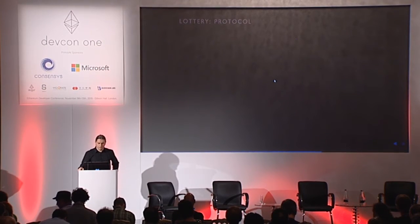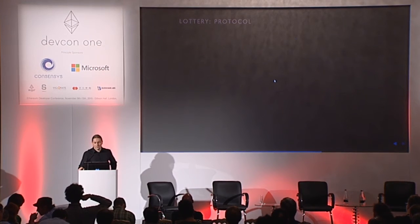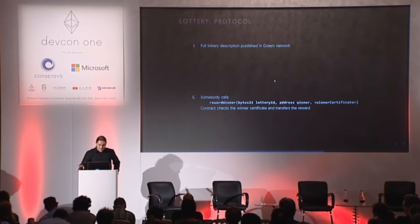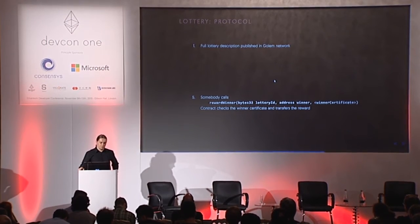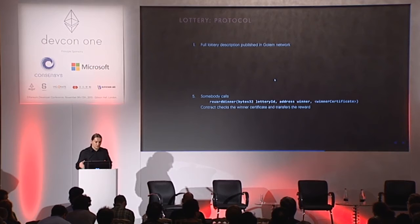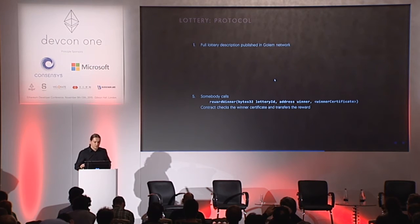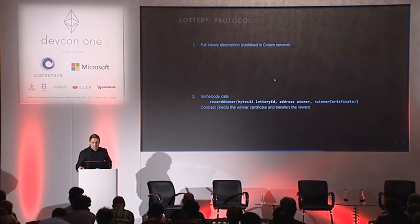In an ideal world, we would be able to draw a random number easily and in a fully verifiable way. In that setting the algorithm would be straightforward: the task sender would send the lottery description to everyone in the Golem network so that everyone can verify it is fair, and after that anyone could call a reward-winner function in the contract which would simply send the funds to the winning node.